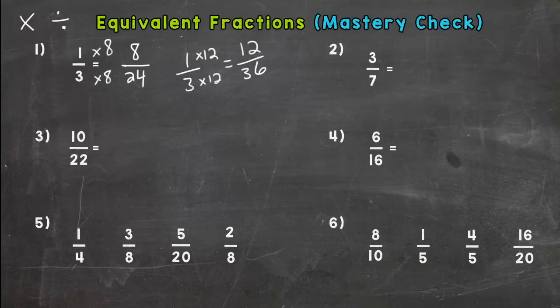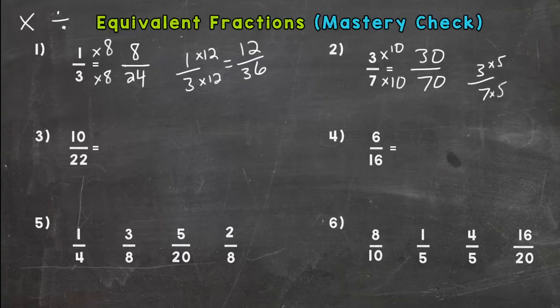Number two, 3/7. I'm going to multiply them both by 10 and get 30 over 70. And let's do multiply them both by five to get 15 over 35.